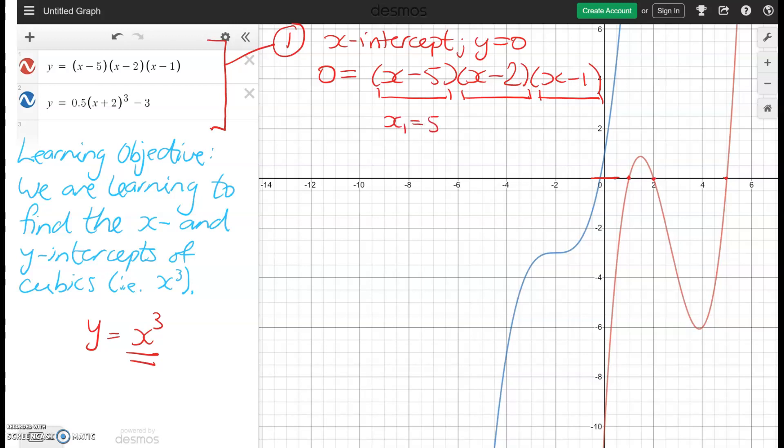So x1 would be equal to five, x2 would be equal to two, and x3 would be equal to one. And if we look at our graph, we can reconcile those numbers with the points we can see on the graph. So that's about one, that's about two, and that would be about five.